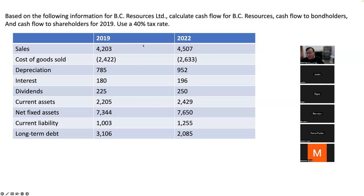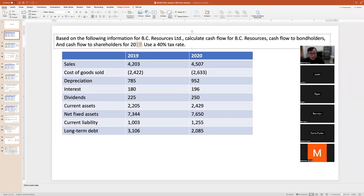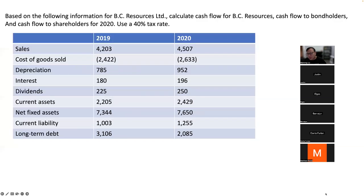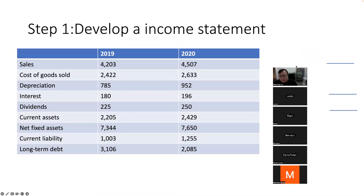In this table, we're provided with lots of numbers for different items. We want to know the cash flows for the business — how much goes to the creditors and how much goes to the shareholders for the year 2020. The first step is to develop an income statement.